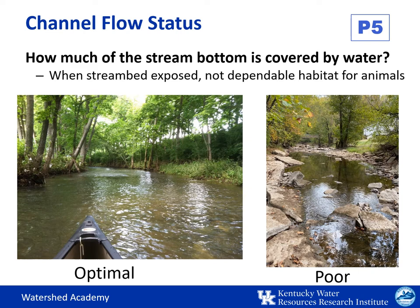Channel flow status assesses how much of the channel is carrying the flow of the stream. Is the water extending to both lower banks with a minimal amount of substrate exposed? Or is the channel carrying very little water with much of the substrate exposed and water present mainly in standing pools? Ideally, the flow will extend to both banks and all substrate habitats will be covered with healthy flow levels, ensuring a broader range of stable aquatic habitat.